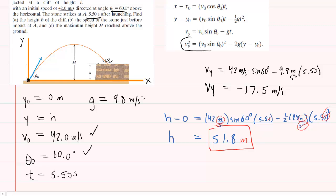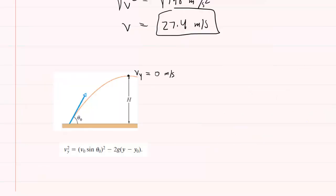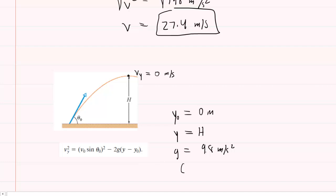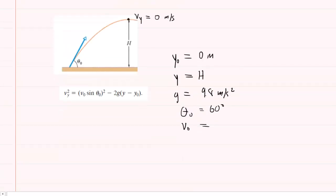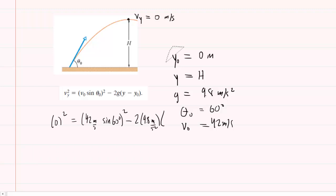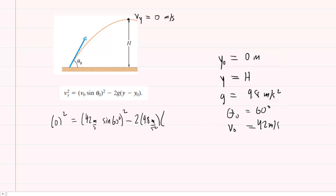The most advantageous equation to use gives us the final y-velocity squared in terms of initial conditions. Plugging in known values: the initial y-coordinate is 0 (launched at the origin), the final y-coordinate is H, g is 9.8 meters per second squared, the launch angle is 60 degrees, and the initial velocity is 42 meters per second. The final y-velocity is 0 at maximum height. So: 0 equals 42 meters per second times sine of 60 degrees, squared, minus 2 times 9.8 times H minus 0, which simplifies to just H.